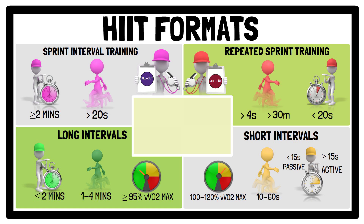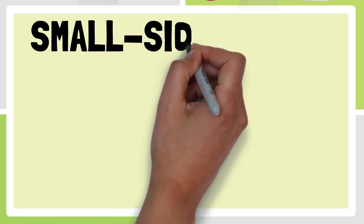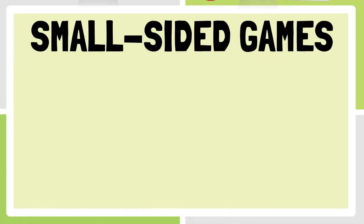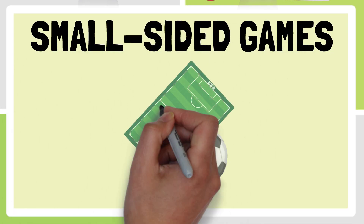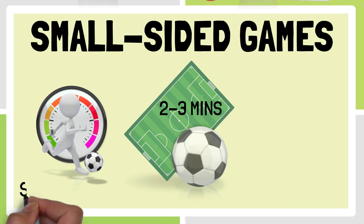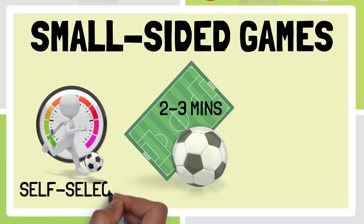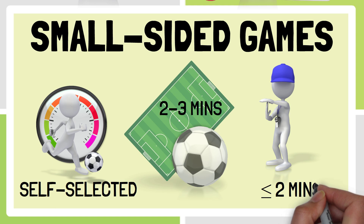And lastly, game-based training — or in the case of soccer, small-sided games — involves small formats of play for 2–3 minutes, at self-selected intensities, using rest periods of 2 minutes or less between play.